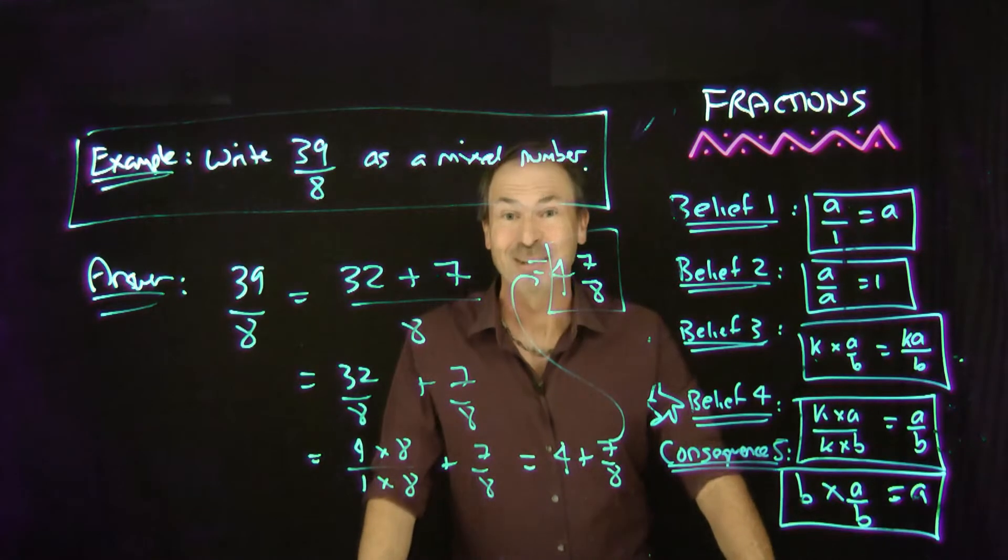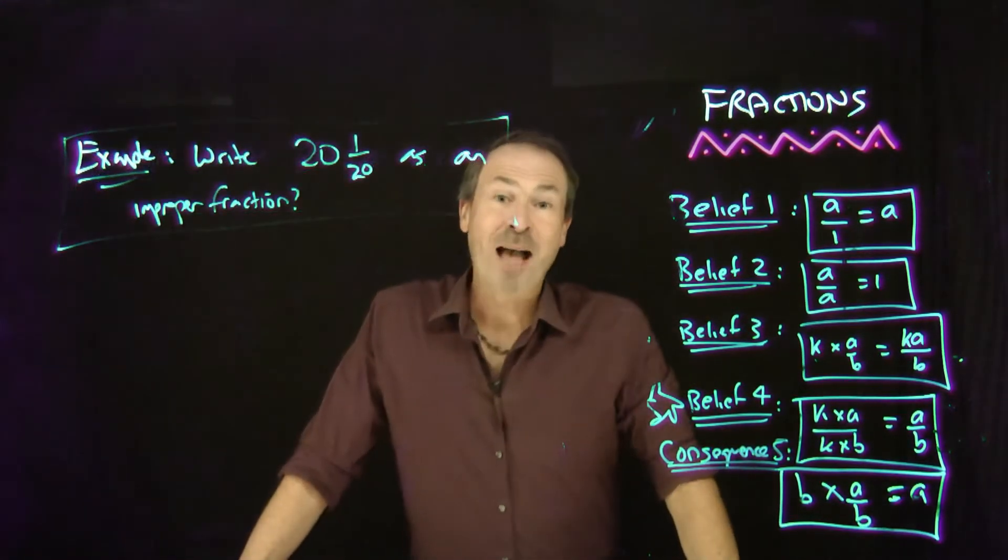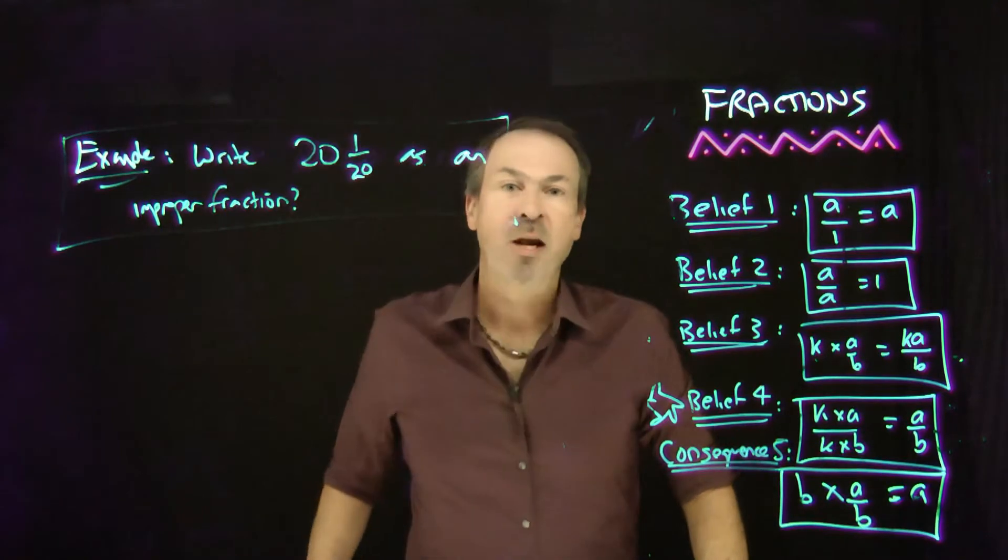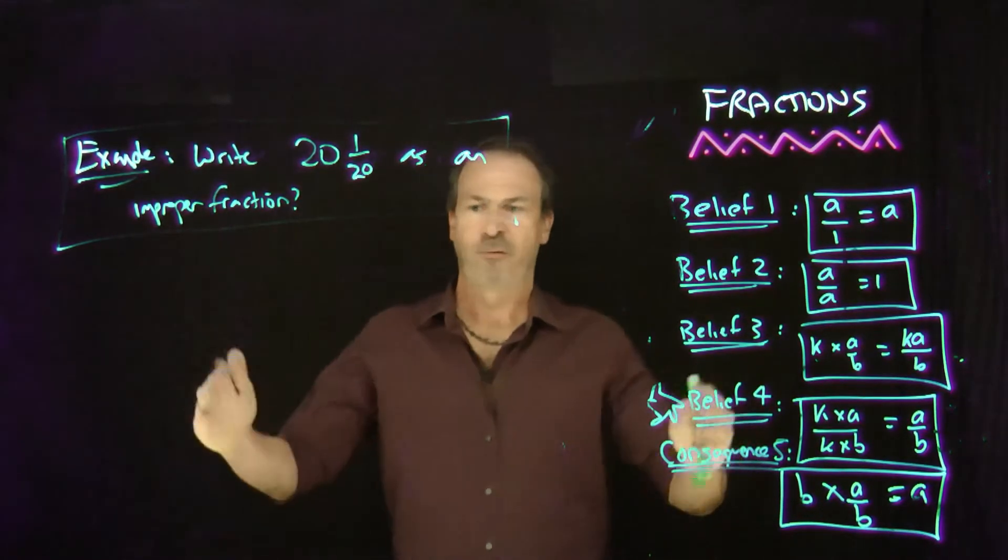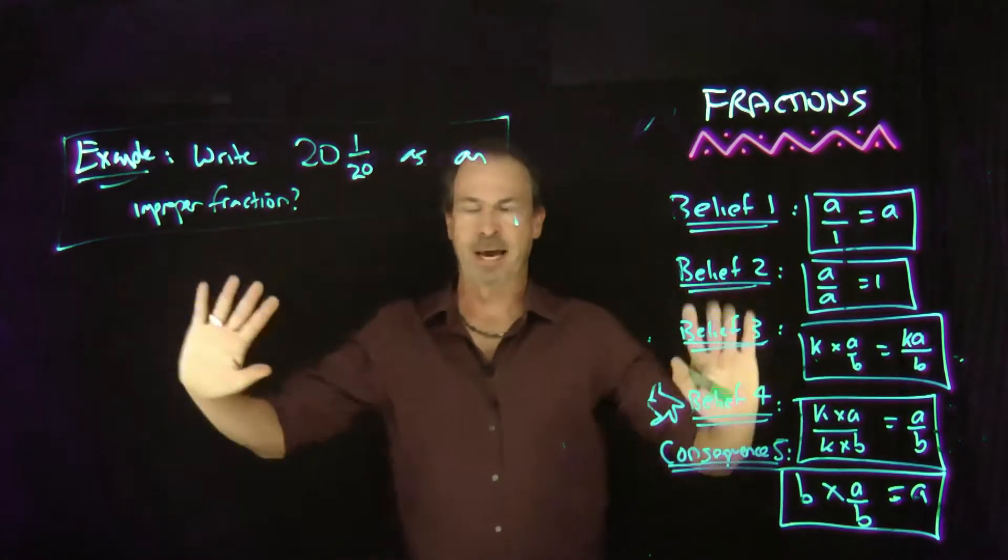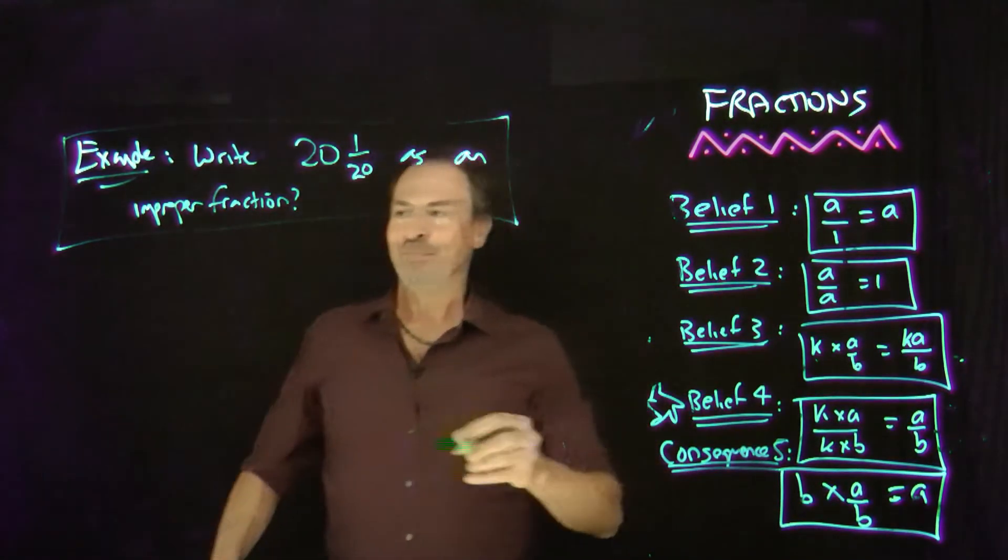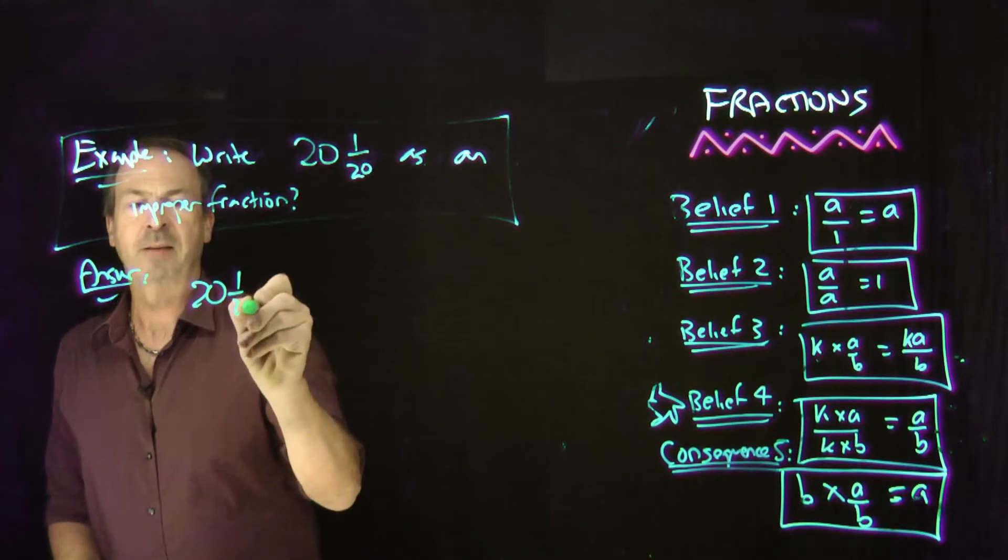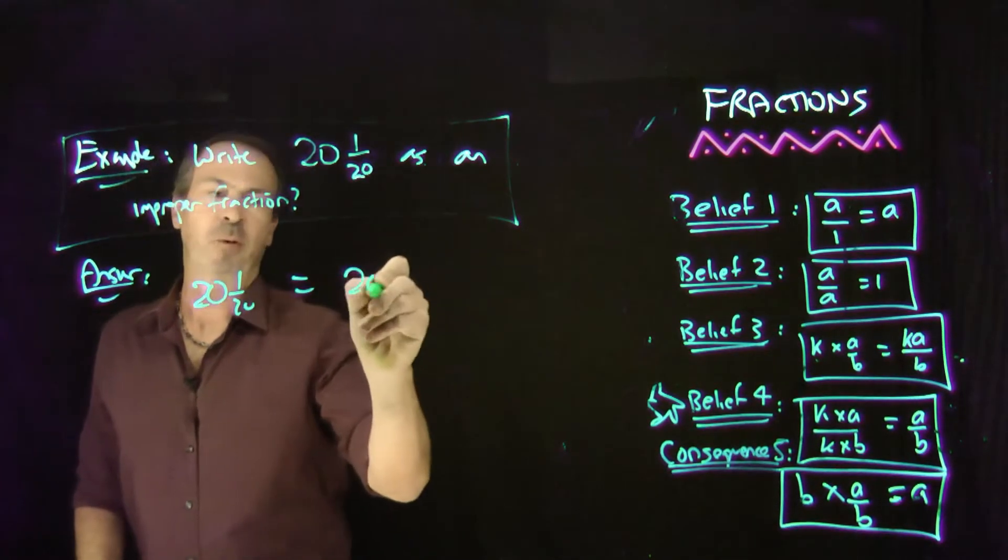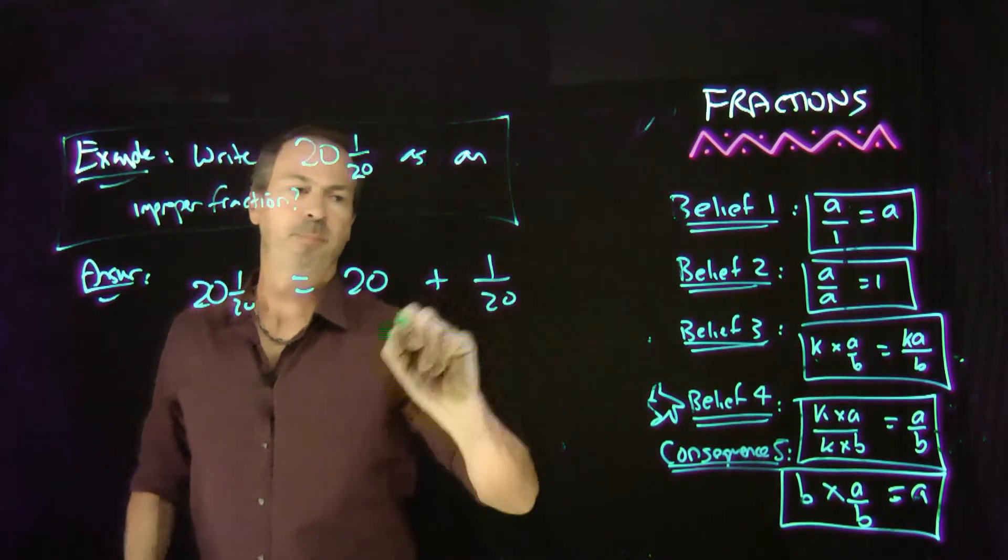This time let's go backwards. Here's a mixed number. 20 and 1 twentieth. Please write 20 and 1 twentieth as an improper fraction. That is a single fraction with a numerator and denominator and be done. Here's my answer. So 20 and 1 twentieth. Let me actually write out the plus sign because that's actually always helping these things. 20 plus 1 twentieth. Great.